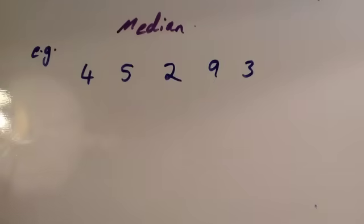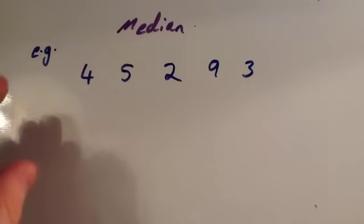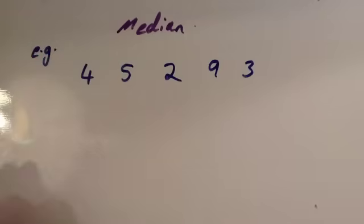We're now going to look at the median. The median is the middle number once the numbers have been arranged in numerical order. Here we've got an example: the numbers 4, 5, 2, 9, and 3. We're going to work out the median for this set of numbers.